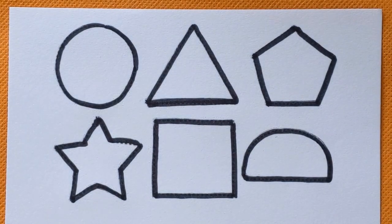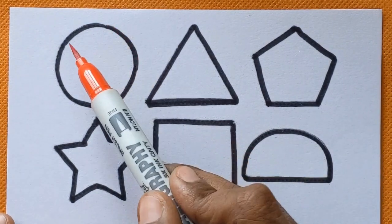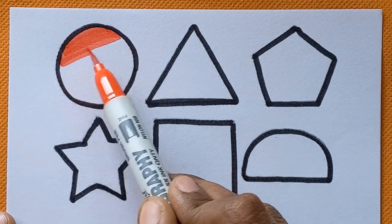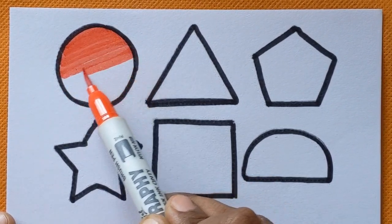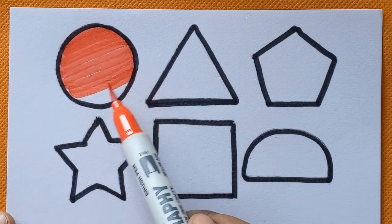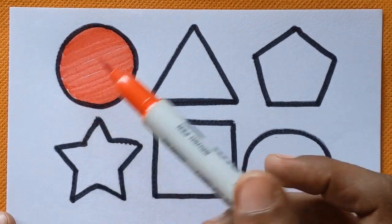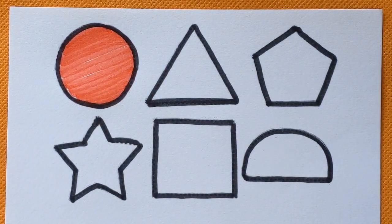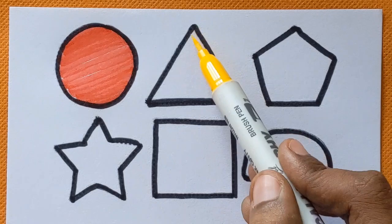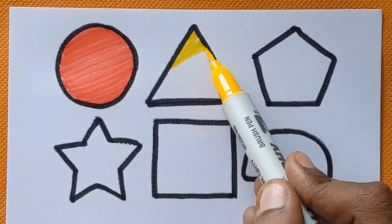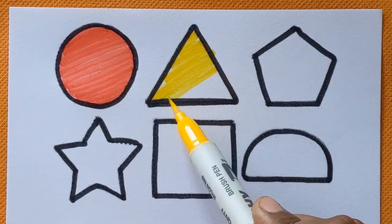Now, let's see the colors. This is circle shape. Circle shape with a red color. Next one is triangle. Triangle with a yellow color.